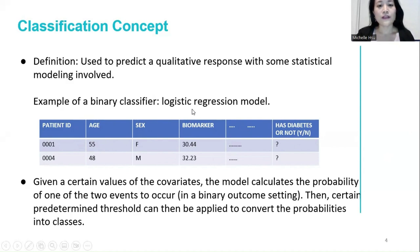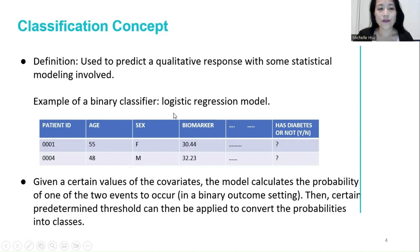You can use logistic regression as an example of a binary classifier to model the probabilities of having an event as a function of age, sex, and biomarkers. The event here is the patient having diabetes.